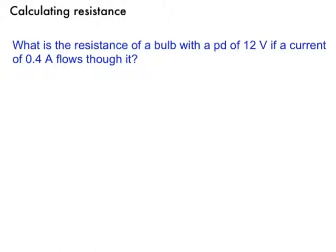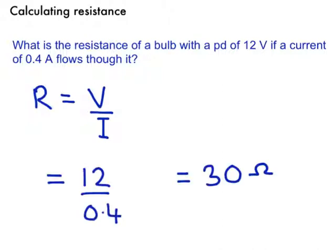So, all we need to do is use our equation here. Resistance equals potential difference over current. We just put the numbers in. So that's going to be the resistance is equal to 12 volts divided by 0.4 amps, which gives me a value of 30 ohms, is the resistance of the bulb.